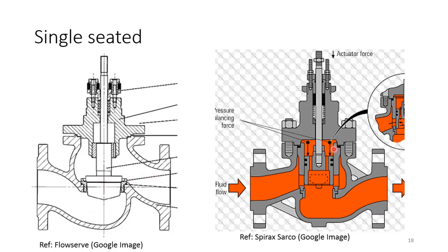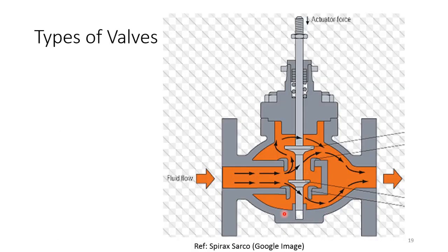On the cage guided side, you have the cage, the plug, the stem, and holes in the cage. These holes act as balancing: when the fluid comes through, the holes balance the forces, making the actuator force much lower — hence it is called balanced or cage guided. In double seated valves, there are two plugs and two seats. The forces cancel each other out — one is under the plug and one is over the plug — so very minimum actuator force is required. Double seated valves are used for specific applications requiring very high Cv.